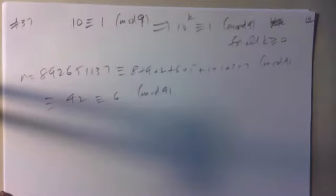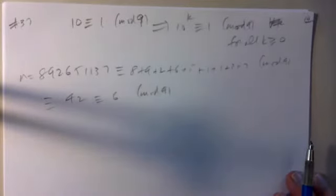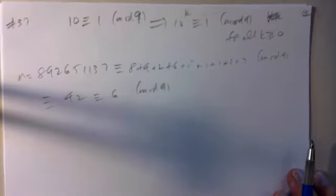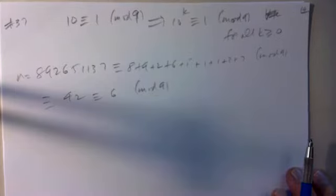This rule is often taught to kids in elementary school — it's called 'casting out nines.' It's an easy way to tell if a number is divisible by 9: just add the digits, and if the result is still large, add again, very quickly getting a small number.